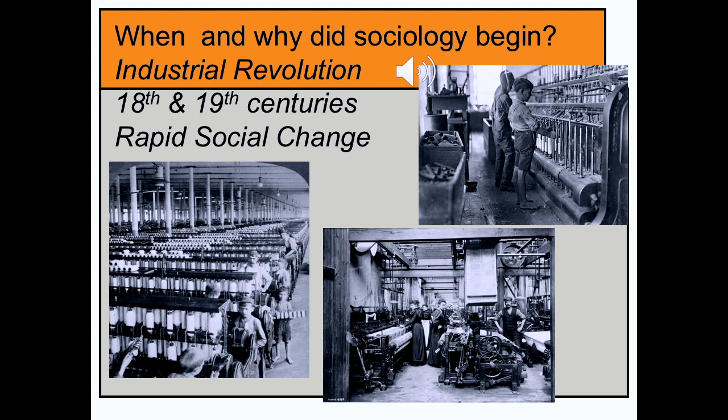Sociology developed as a discipline basically in response to what was happening in society caused by the Industrial Revolution of the 18th and 19th centuries. Hundreds of thousands of people moved from the farms into the cities to work in factories. All of social life was in upheaval, and various theories tried to explain what was going on.